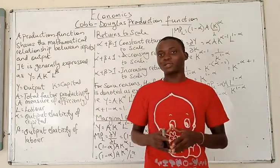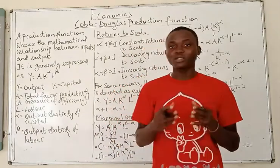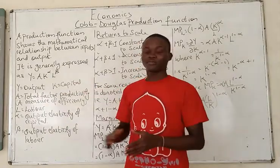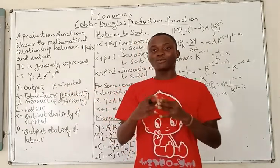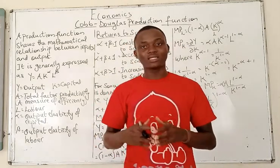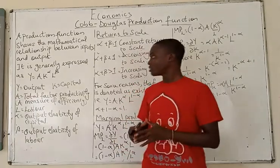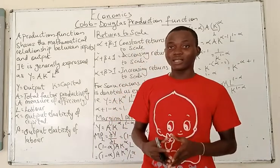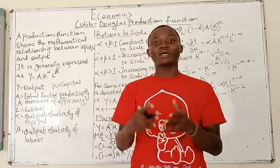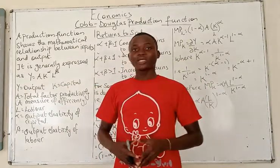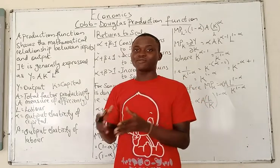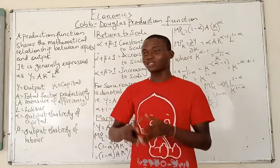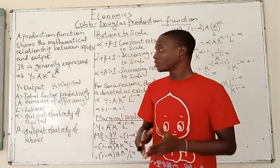Decreasing returns to scale does not simply mean that total output is not increasing. What decreasing returns to scale means is that if there is a proportionate change in the inputs being used to produce a commodity, the change in output will be less proportionate than the change in input. For example, if K and L change by 50%, output is going to increase by a percentage that is less than 50% — it might increase by 30%, 35%, 40%, 49%, and so on.